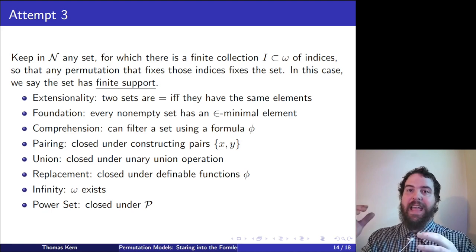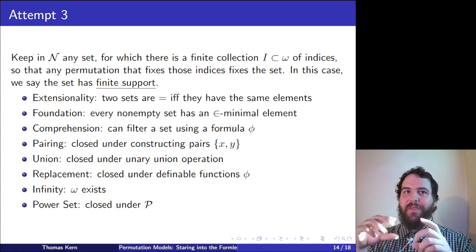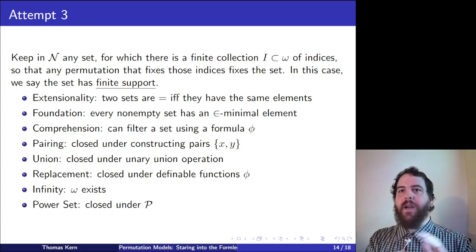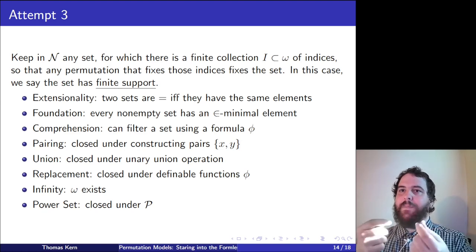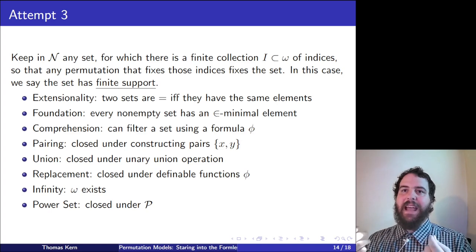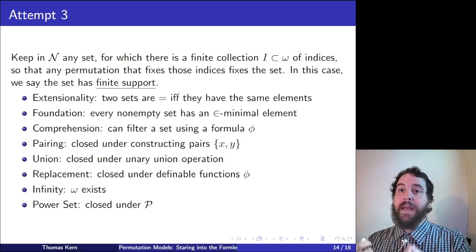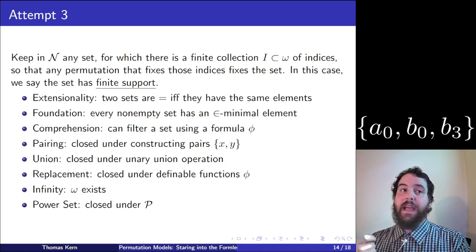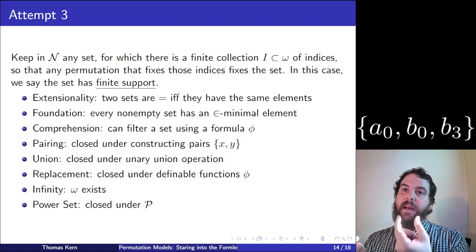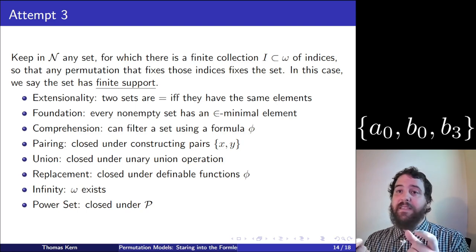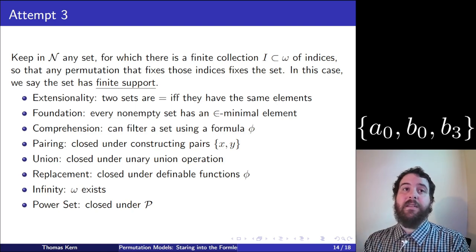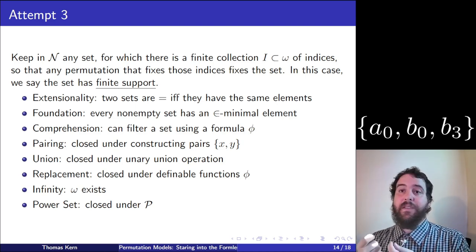I is the support: those pairs of atoms we can have unmatched. For example, a set containing just A1 and B2 has support {1, 2}. A set containing A0, B0, and B3: swapping the zeroth pair leaves it unchanged, so 0 need not be in the support; only 3 must be. So its support is {3}.